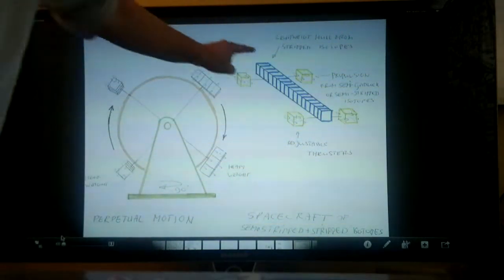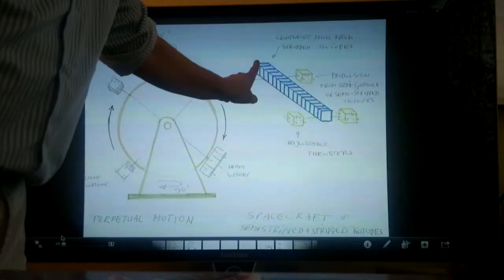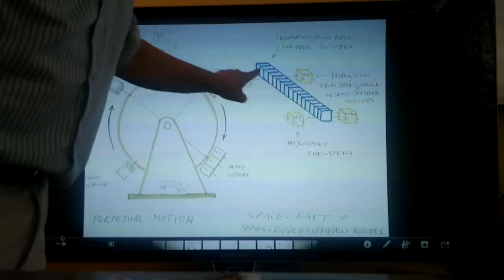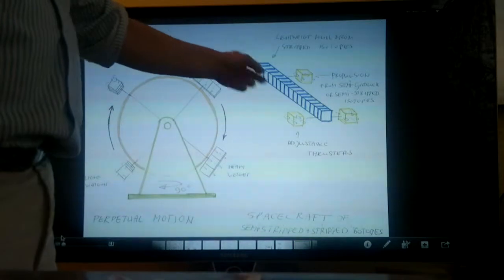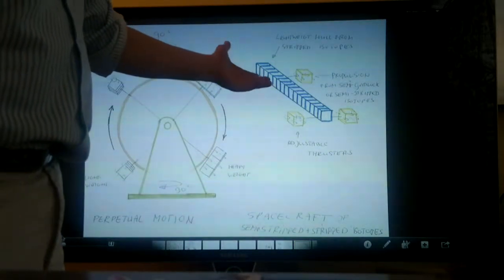This is a spaceship, lightweight hull from stripped isotopes. You can take iron, strip it, then it doesn't react, respond to gravity anymore.